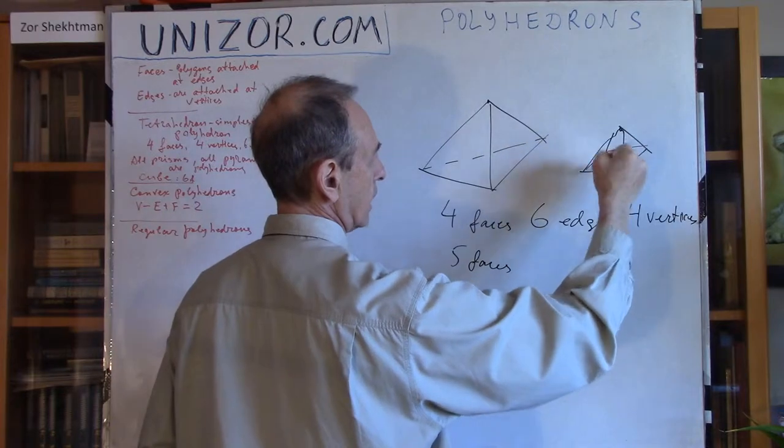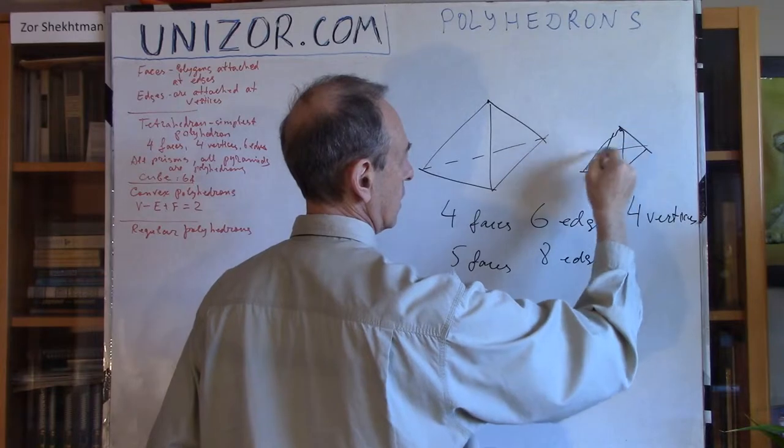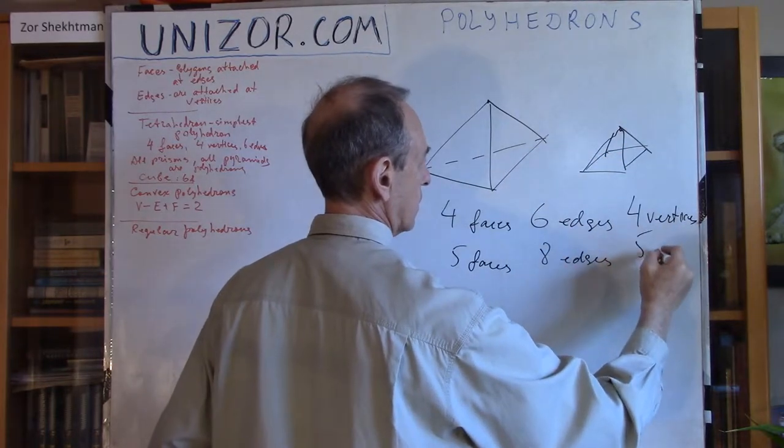Edges, edges one, two, three, four, and four, eight edges, and one, and four, five vertices.